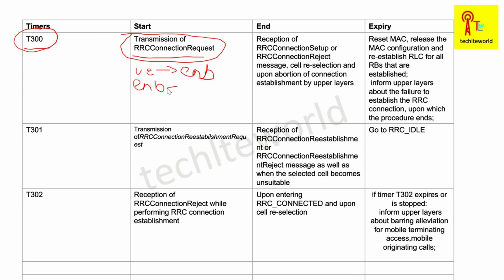T300 ends when the eNodeB responds to the RRC Connection Request by sending either an RRC Connection Setup or an RRC Connection Reject message. When the UE receives either of these messages, this timer will be stopped.